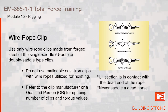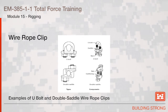Wire Rope Clip. Use only wire rope clips made from forged steel of a single saddle or U-bolt or a double saddle type. Do not use malleable cast iron clips with wire ropes utilized for hoisting. Refer to the clip manufacturer or qualified person for the spacing, number of clips, and torque values. The U-section is in contact with the dead end of the rope. A common rule of thumb is: never saddle a dead horse. This slide illustrates the two types of wire rope clips — the U-bolt clip and the double saddle wire rope clip.